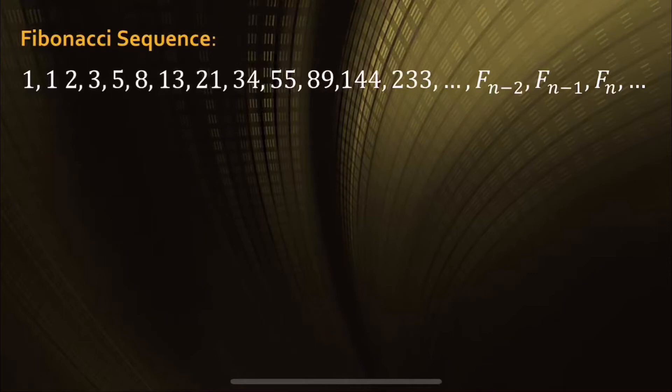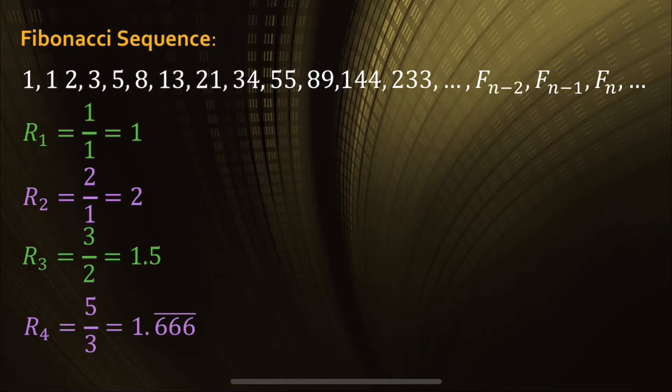Let's look at the ratio between the numbers. So let's divide 1 by 1, and that's 1, that's kind of boring, so let's just keep going. And the second ratio is 2 divided by 1, which is 2. Now we have 3 divided by 2, that's 1 and a half. Now 5 divided by 3 is 1 and 2 thirds.